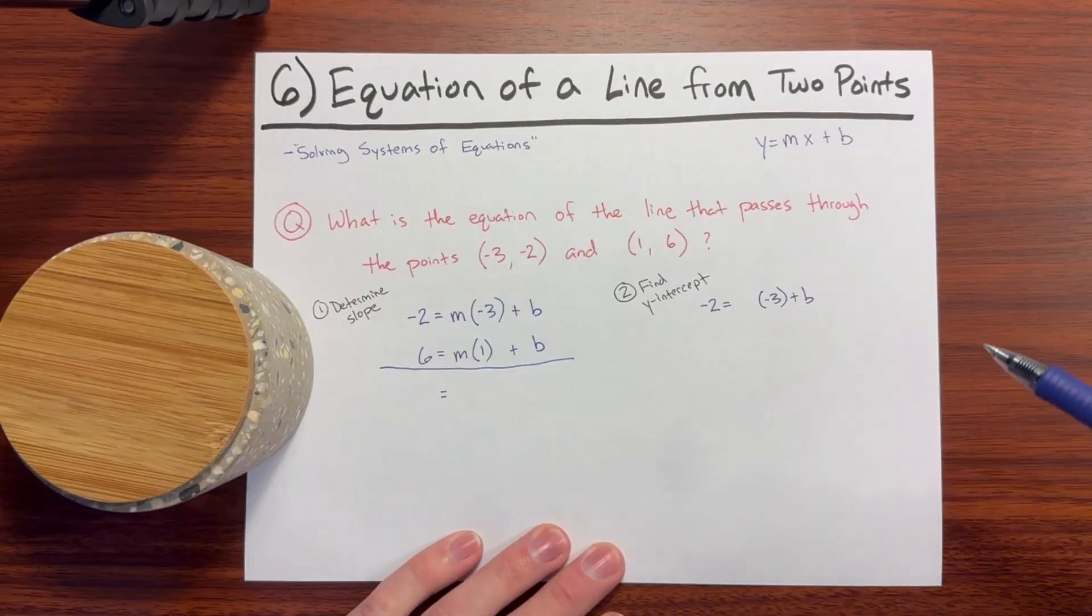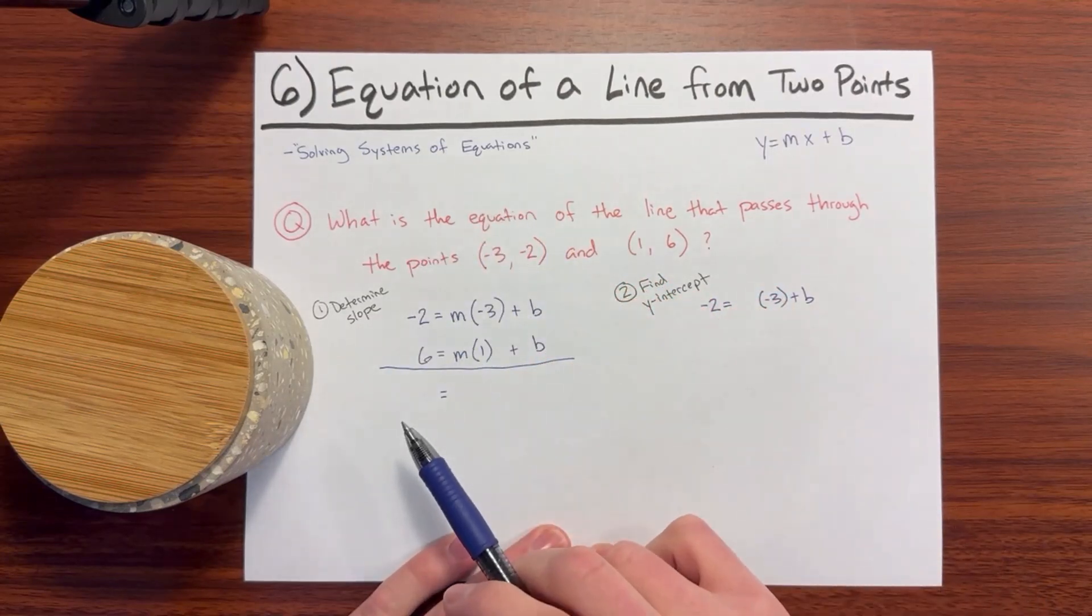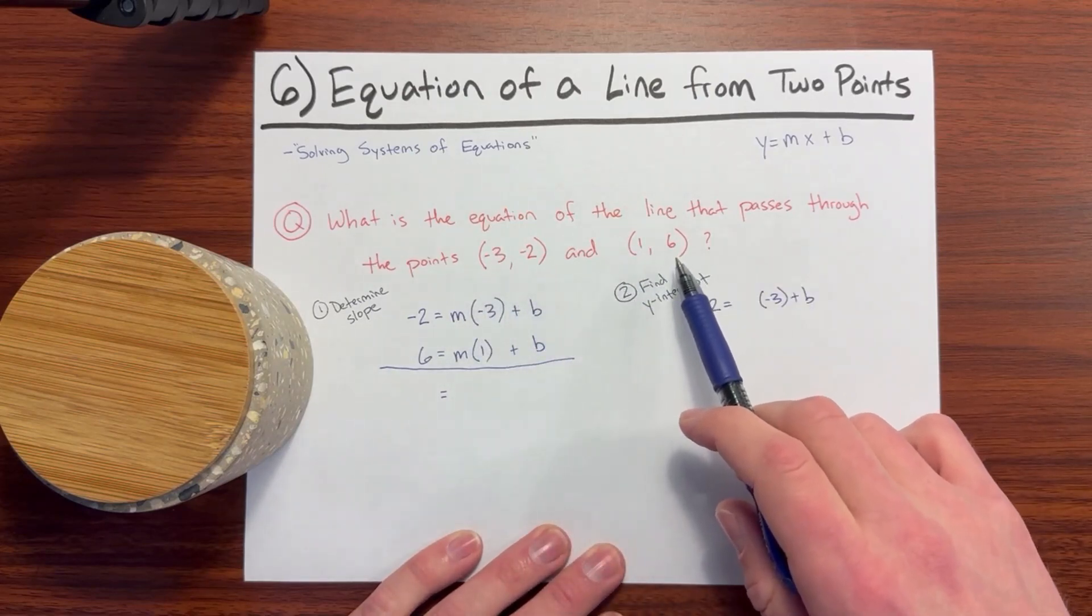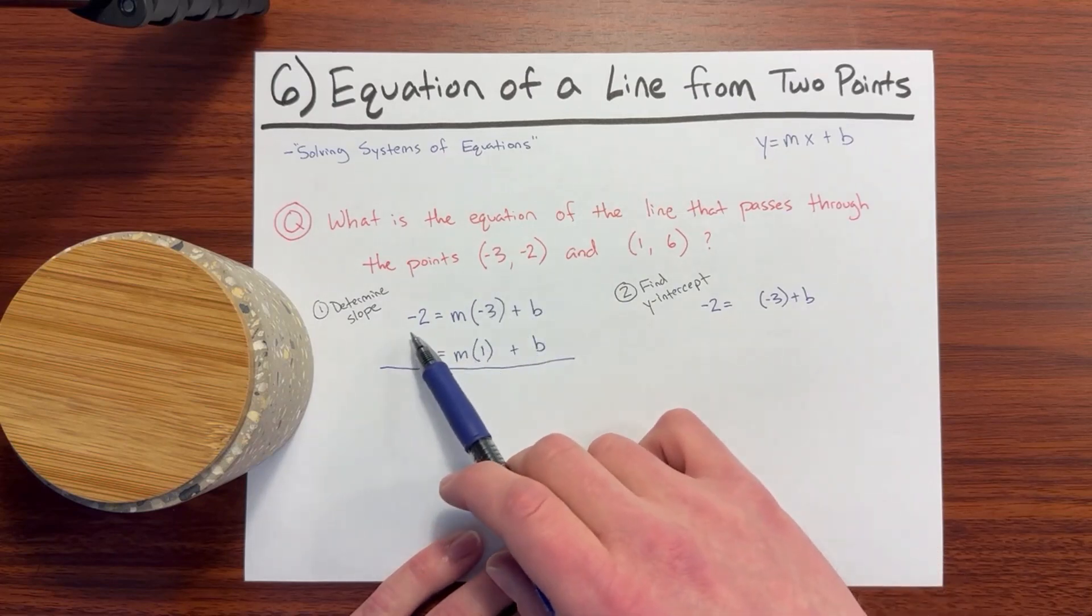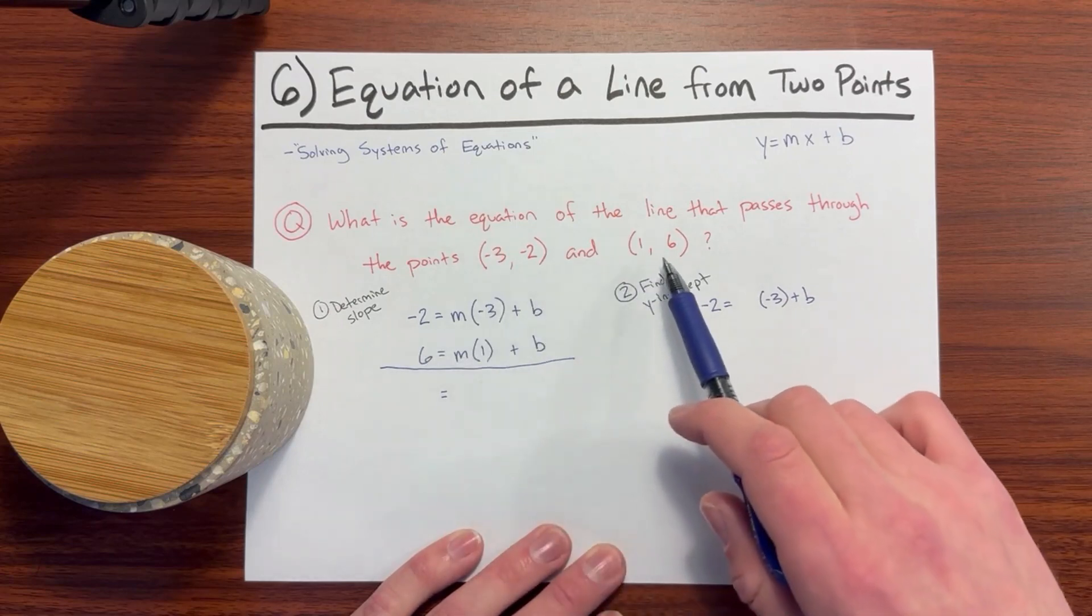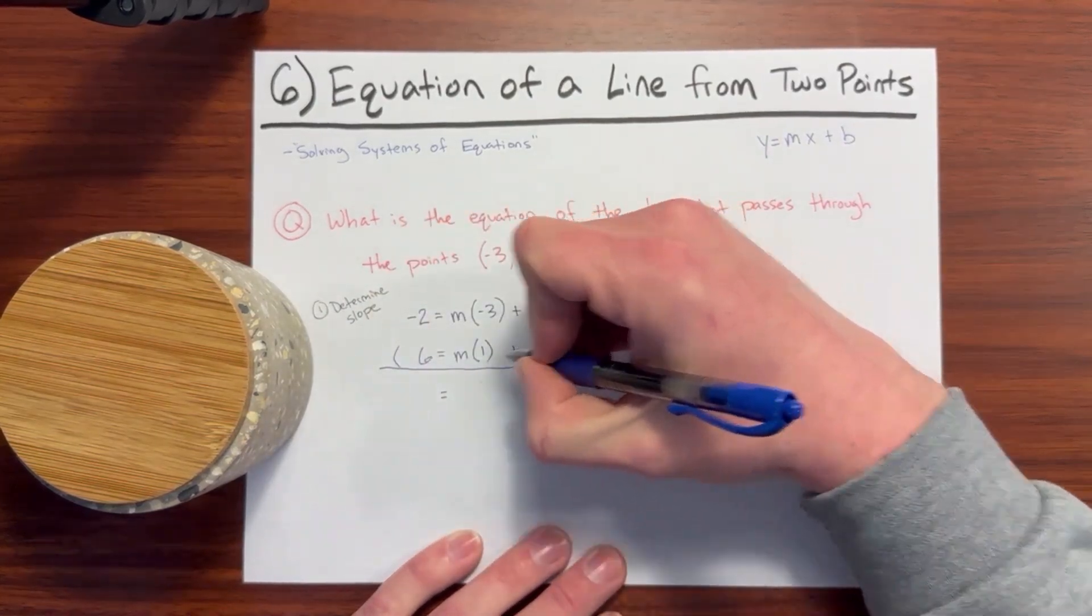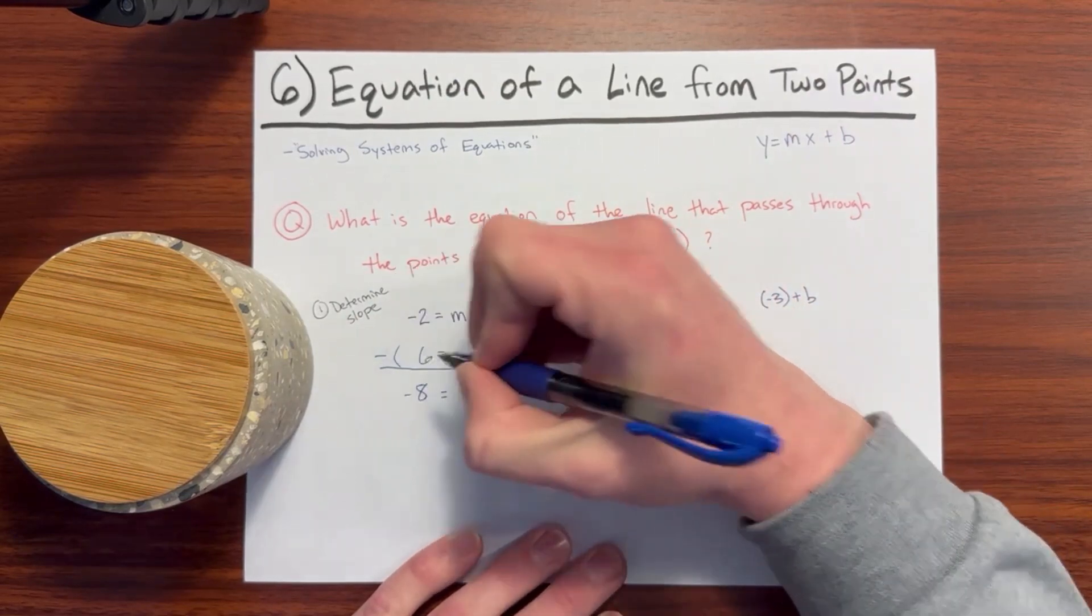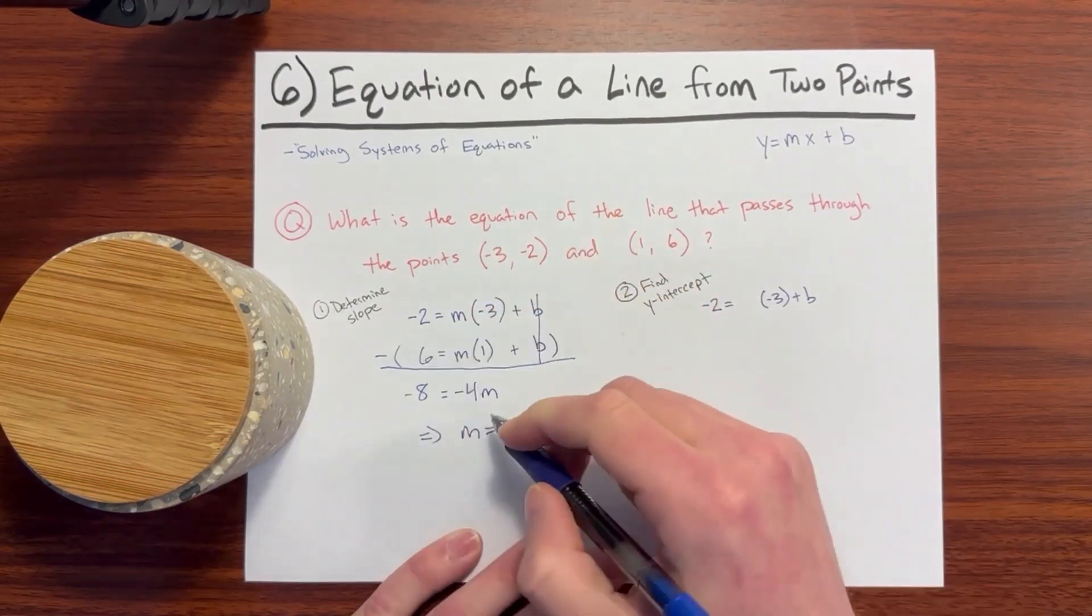Number 6: Equation of a line from two points. To solve these problems, you'll need to know how to solve a system of equations which we've covered in a previous video. A question could ask, what is the equation of the line that passes through the points negative 3, negative 2, and 1, 6? First we'll need to determine the slope and we'll do that by using a system of equations. From the point negative 3, negative 2, we have negative 2 equals m times negative 3 plus b. We're using the y equals mx plus b form. And for the point 1, 6, we have 6 equals m times 1 plus b. To isolate the m here, we will subtract the lower equation from the upper equation because that will be b minus b, those will cancel out. We have negative 2 minus 6, which will be negative 8. And then we have negative 3m minus 1m. So negative 4m, negative 8 divided by negative 4 is 2.